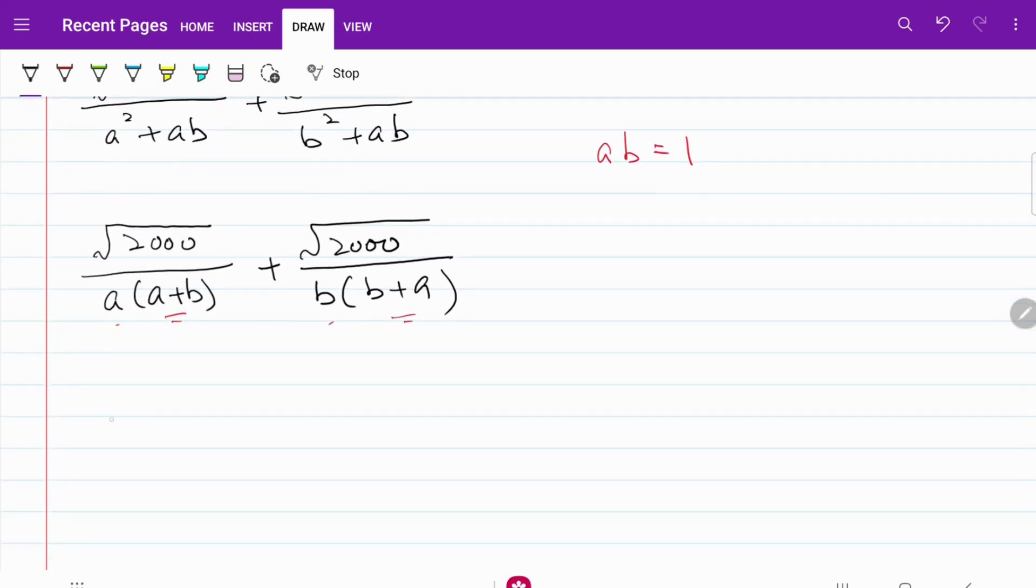I can multiply the numerator with ab. If I multiply by ab, I'm essentially multiplying by 1 and not making any changes. So the denominator remains the same.